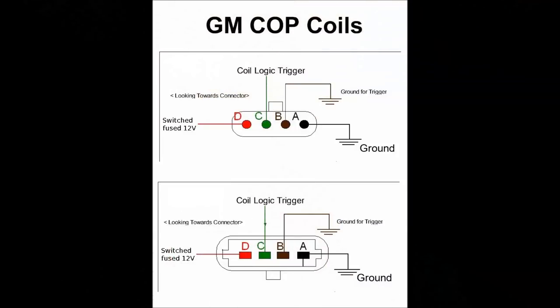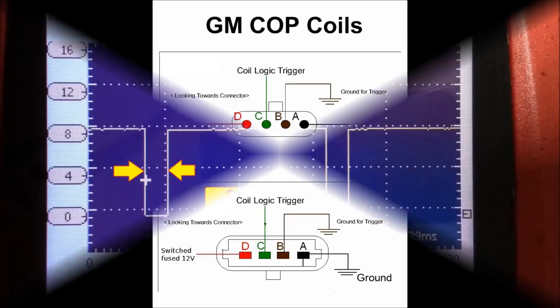Here on screen is a very basic simplified wiring diagram for the coil connector. You have the 12 volt switched power from the ignition switch, and a coil logic trigger which gets the square wave.